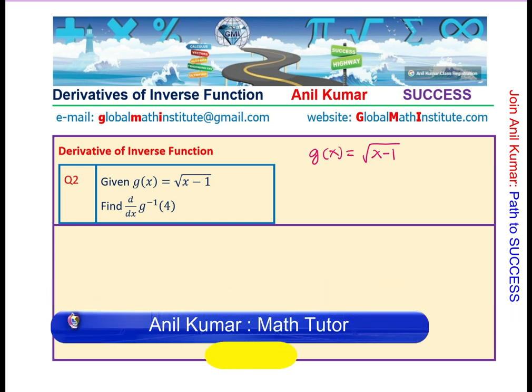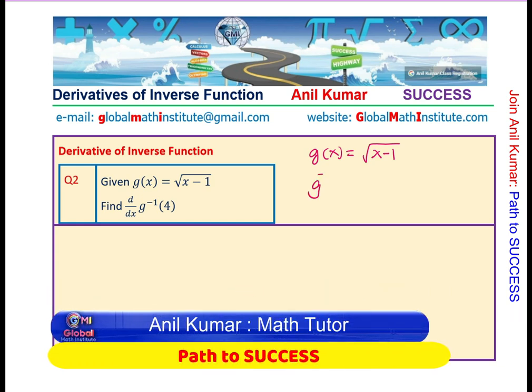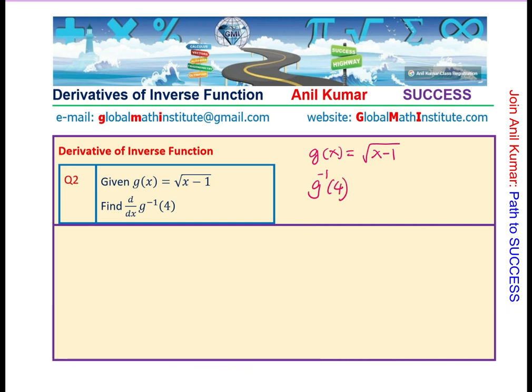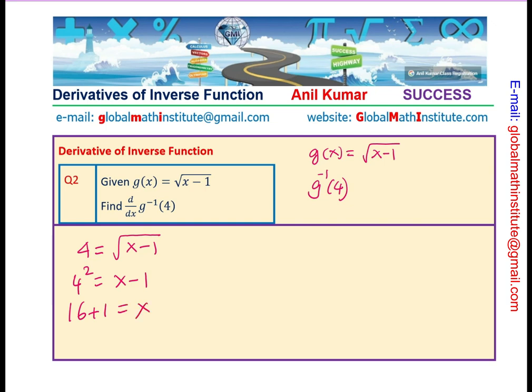So, first thing is to find what is g inverse of 4. To find g inverse of 4, 4 has to be the output. We have 4 equals to square root of x minus 1. 4 square equals to x minus 1. 16 plus 1 equals to x. So, x is 17.